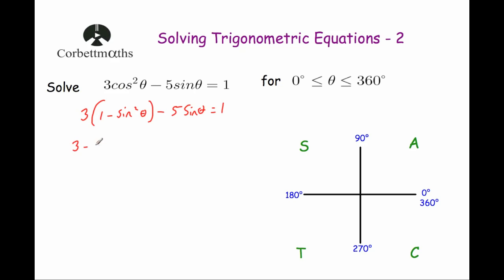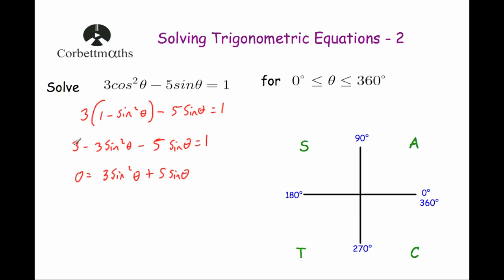Expanding gives 3 minus 3 sine squared θ minus 5 sine θ equals 1. Because we have a negative 3 sine squared θ term, we rearrange by adding 3 sine squared θ and 5 sine θ to both sides and subtracting 3 from both sides, giving zero equals 3 sine squared θ plus 5 sine θ minus 2. This looks like the quadratic 3x squared plus 5x minus 2 equals zero, so we factorize.